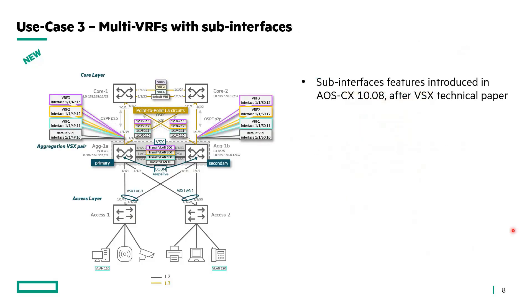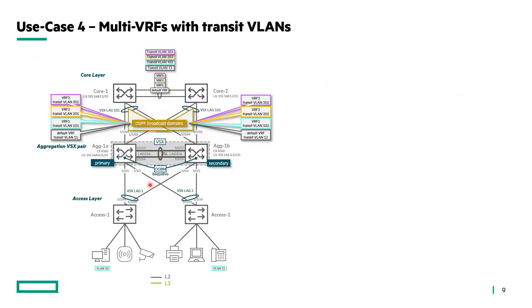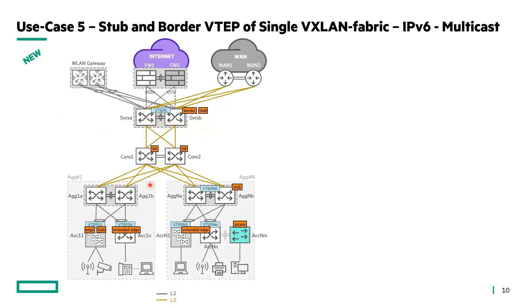A new use case covers a single VRF with dual-stack IPv6 and multicast. Another one of interest — since sub-interfaces were introduced after the first VSX technical paper — is sub-interfaces in the context of multi-VRF for upstream routing. The next existing use case covers multi-VRF with transit VLAN. A further new use case describes stub and border VTAP functions on a single VXLAN fabric with IPv6 and multicast in the overlay.